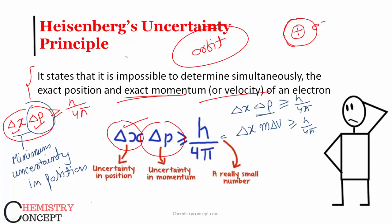What I will be doing, it would be del v is greater than or equal to h upon 4 pi divided by uncertainty in position del x into m. This is how we can find out uncertainty in velocity if uncertainty in position is given.